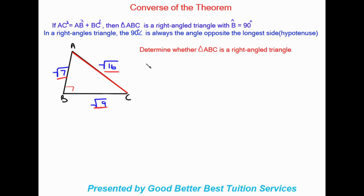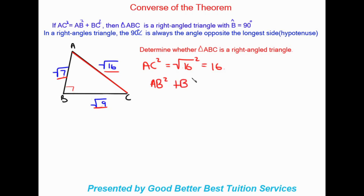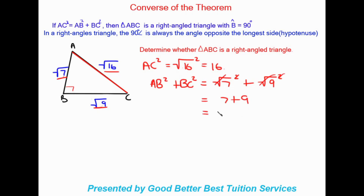Let's work out if this triangle is right-angled. First we find AC squared: substituting in, AC equals the square root of 16, so AC squared equals 16. So the sum of the other two squares must also equal 16 for this to be a right-angled triangle. AB squared plus BC squared equals (square root of 7) squared plus (square root of 9) squared, which gives us 7 plus 9, equalling 16.